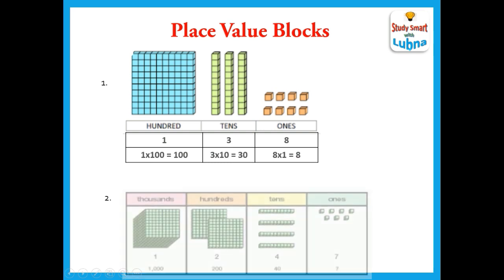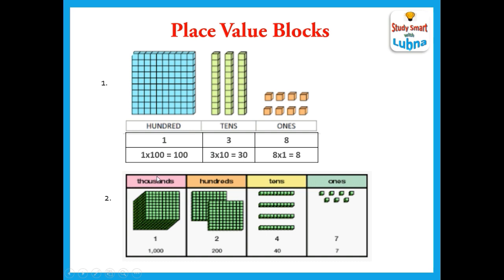Another example. Here you can see four place values instead of three: ones, tens, hundreds, and thousands. We are now talking about a four digit number represented through blocks. There are seven blocks of ones, four blocks of tens, two blocks of hundreds, and one block of thousands. So: seven multiplied by one equals seven, four multiplied by ten equals 40, two multiplied by 100 equals 200, and one multiplied by 1000 equals 1000. The number can be read as 1247.